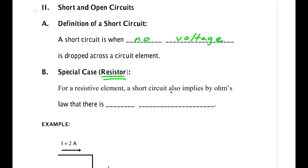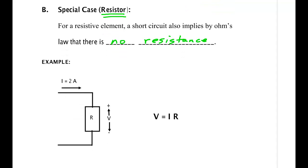For a resistive element, the short circuit also implies by Ohm's law that there is no resistance, or at least very little resistance in the practical world. Now you have to be careful about that, because for instance capacitors have no resistance and many other things have no resistance, and that does not imply they are shorted.